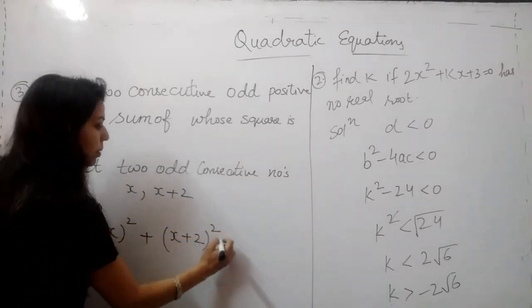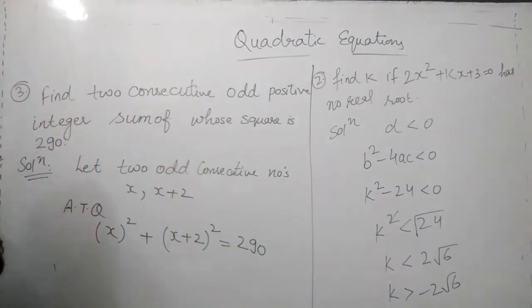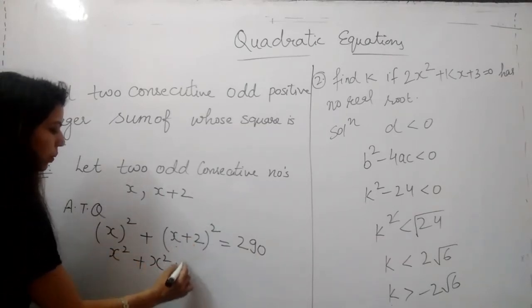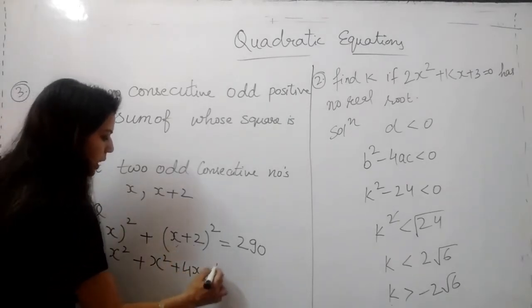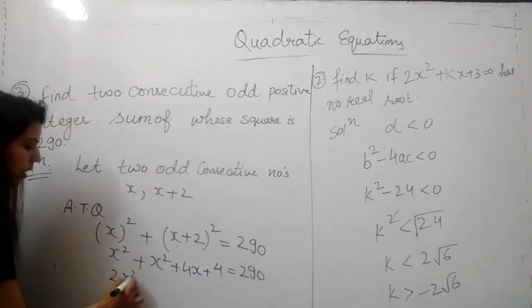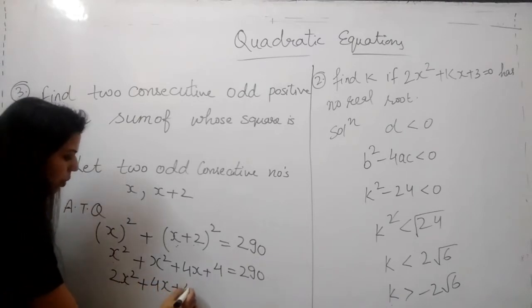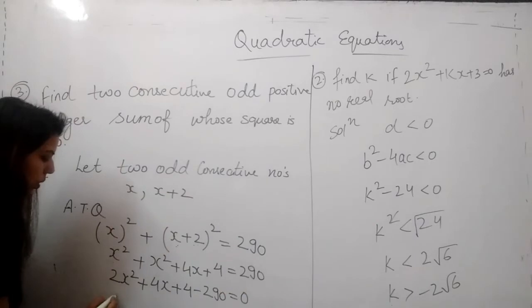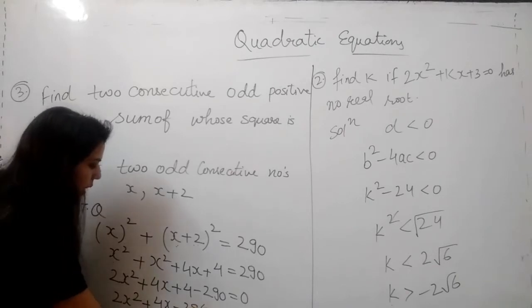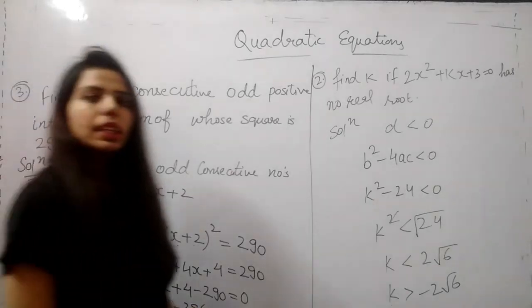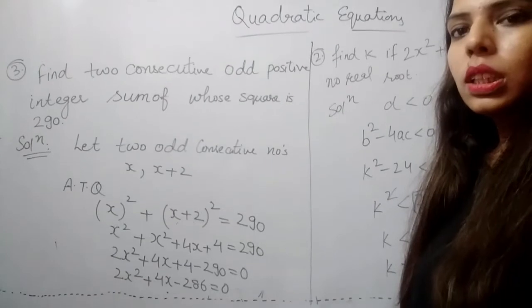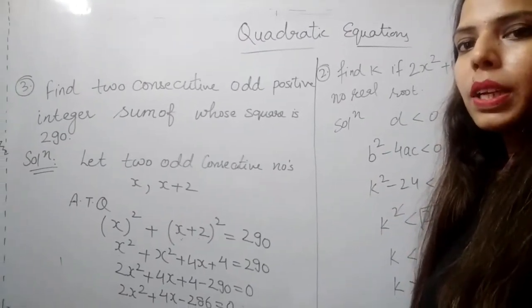As I already told you, the consecutive odd numbers differ by 2. Now according to question, sum of squares is 290. x square plus (x plus 2) whole square equals 290. Here we will apply a plus b whole square that is a square plus 2ab plus b square. That is x square plus x square plus 4x plus 4 equals 290. 2x square plus 4x plus 4 minus 290 equals to 0. As you can clearly see that it has been reduced to a quadratic equation.